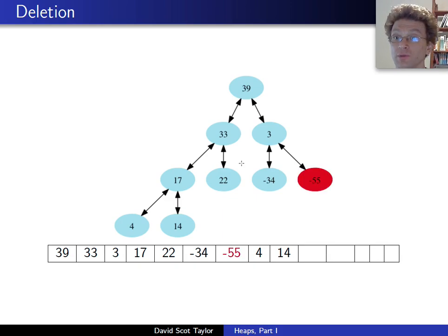One more deletion example to show you what can happen, the other thing that can happen. Suppose that -55, this negative 55 value and 14, negative 55 is what you want to delete. Of course, you wish that you were deleting 14, because that's so easy to delete. So you swap them. Then you delete your negative 55 value. And now, you see,